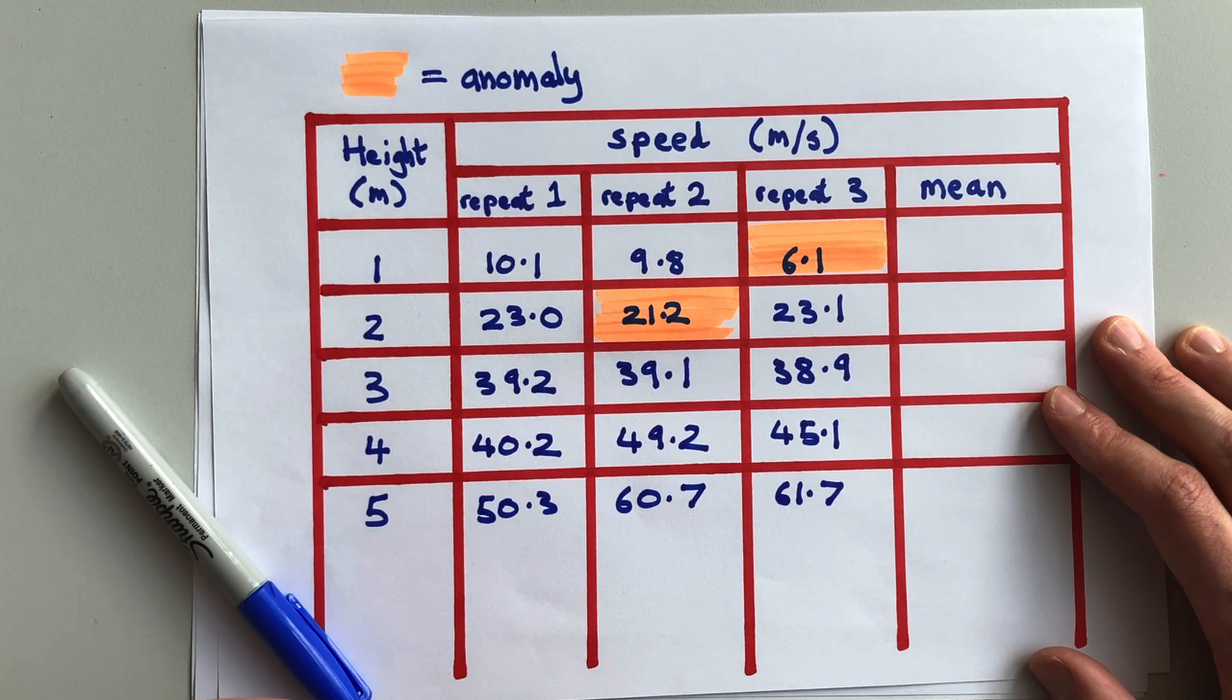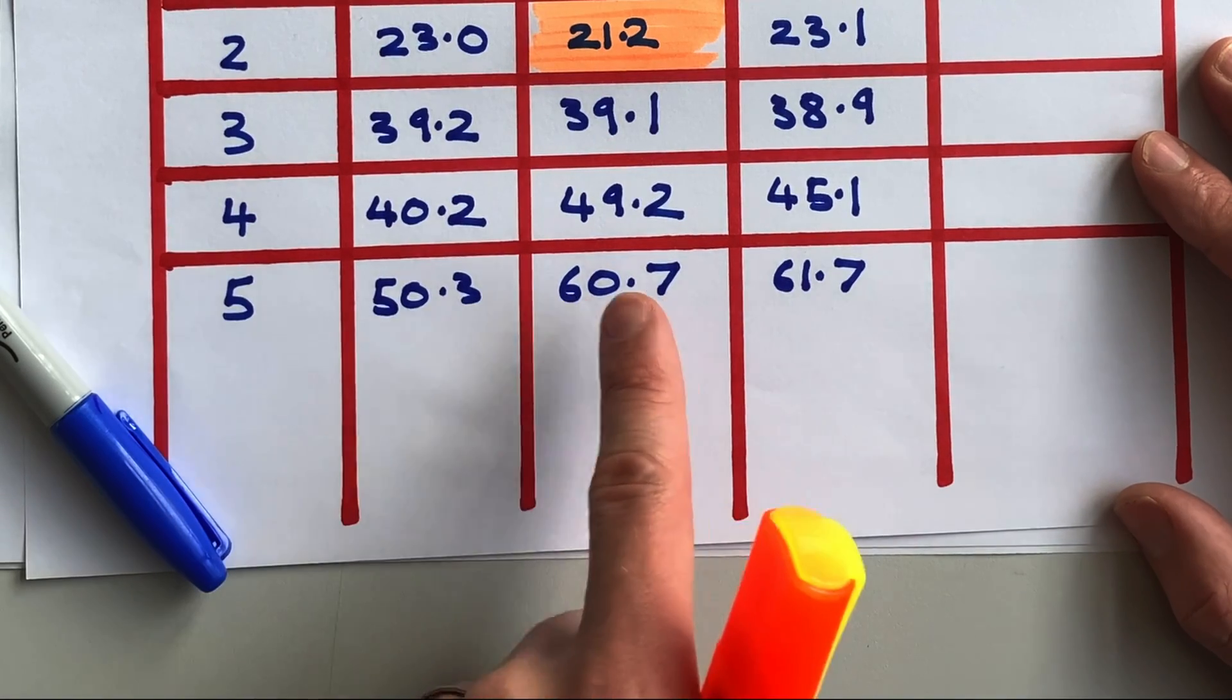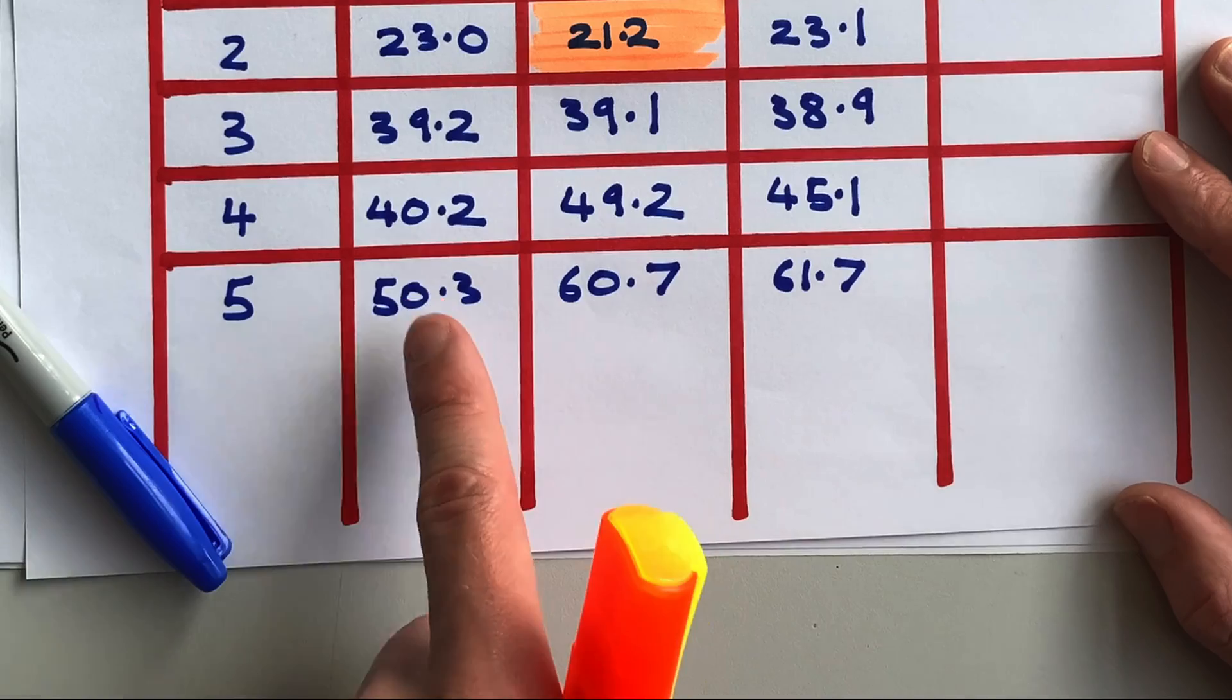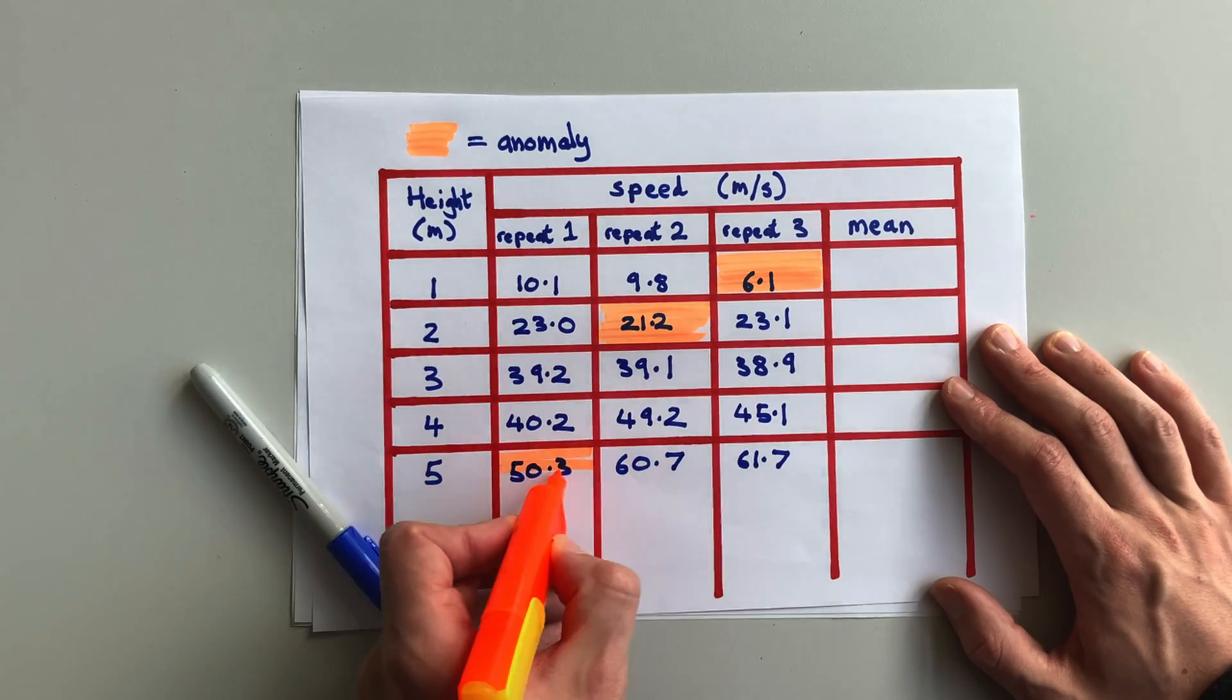So again, no anomaly. In the final row, 50.3 is the anomaly, because it's significantly different from the other two, which are close together.